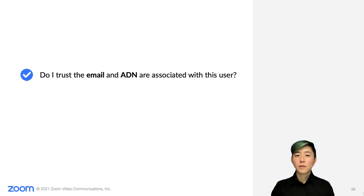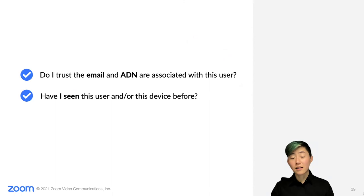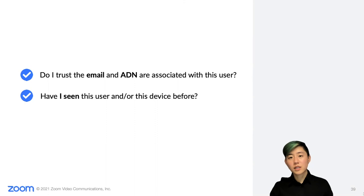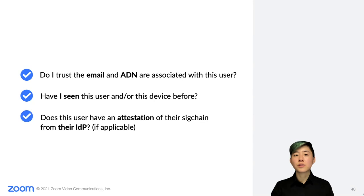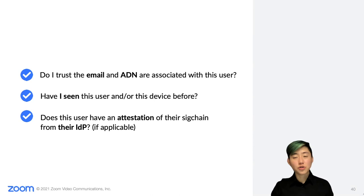Alice may decide if she expects and trusts these user identifiers displayed for Bob. We're implementing two other identity verification features. First, Alice's client will determine if it has seen Bob's identity before in a different meeting, whether on Alice's current device or another. If Alice hasn't met Bob before, or this particular device of Bob's, Alice's client should indicate that by displaying a trust-on-first-use style warning. We will also offer a feature for users and accounts that use an identity provider, or IDP, that allows the IDP to attest to a user's identity.